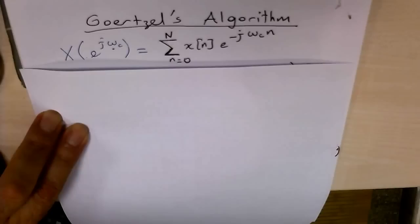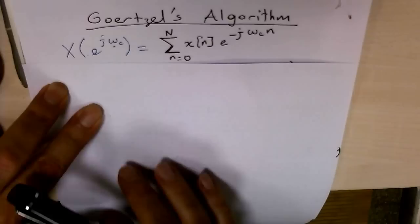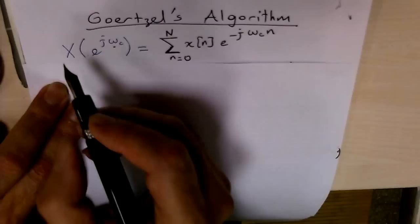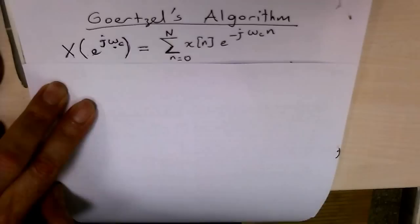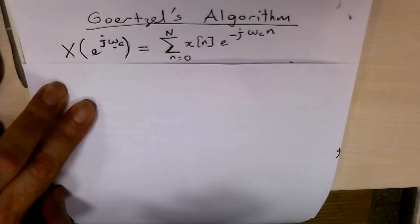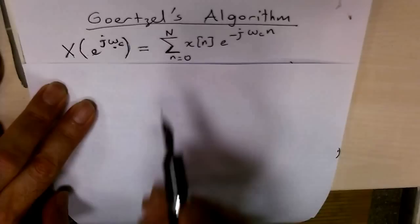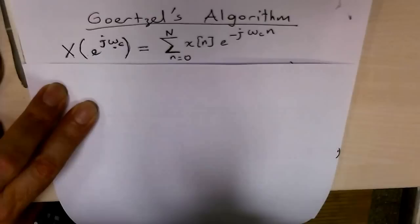Today I'm going to talk about Goertzel's algorithm. This algorithm is about computing the DTFT of a sequence X[n] at a specific frequency omega_c: X(e^{j*omega_c}). This is an M+1 point DTFT, or you can compute a discrete Fourier transform, but it will be an M+1 point DFT. We assume that the input sequence is a finite extent sequence and its length is N+1.